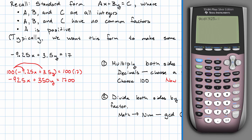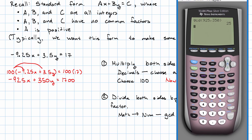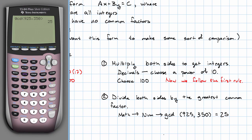GCD, and I'm going to take the GCD of the two numbers on the left: 925 and 350. So the GCD of 925 and 350 is 25.